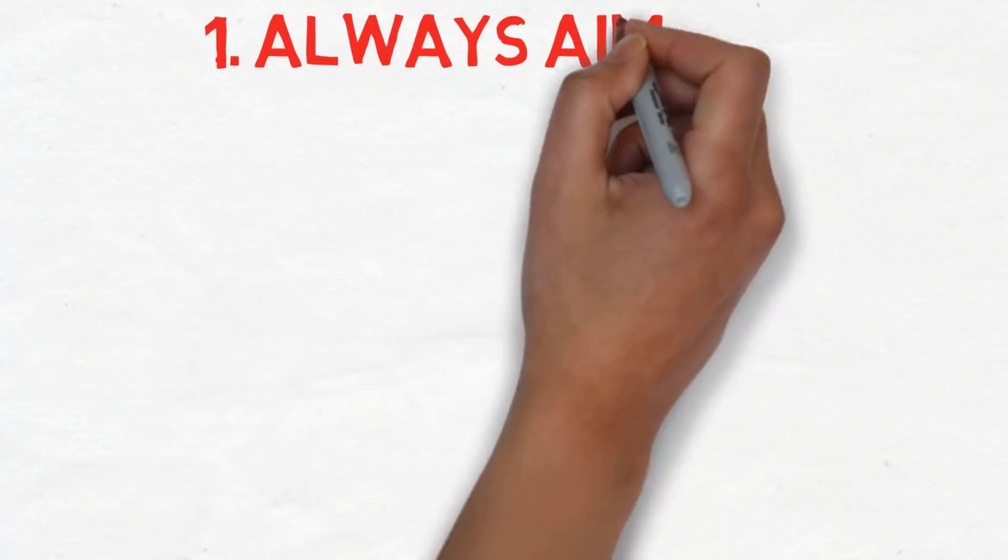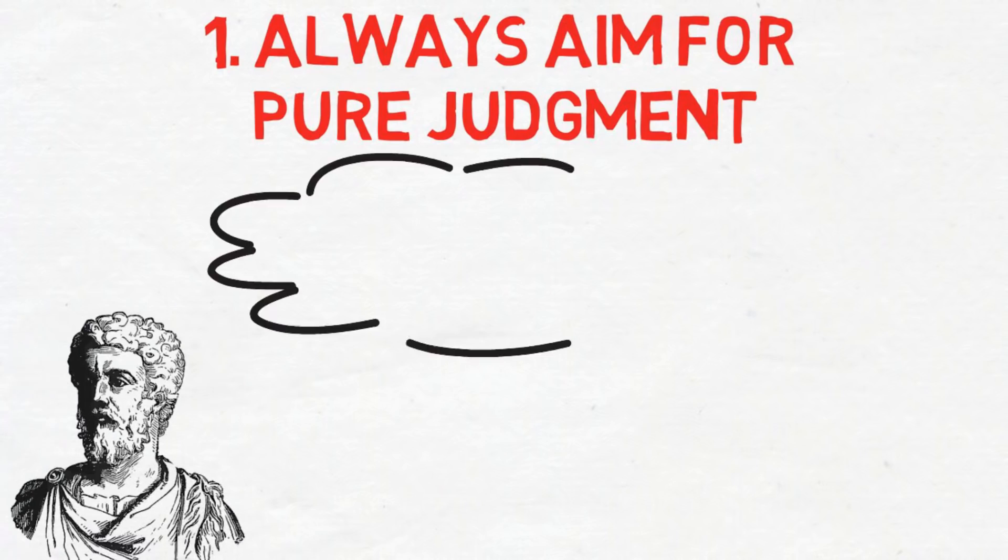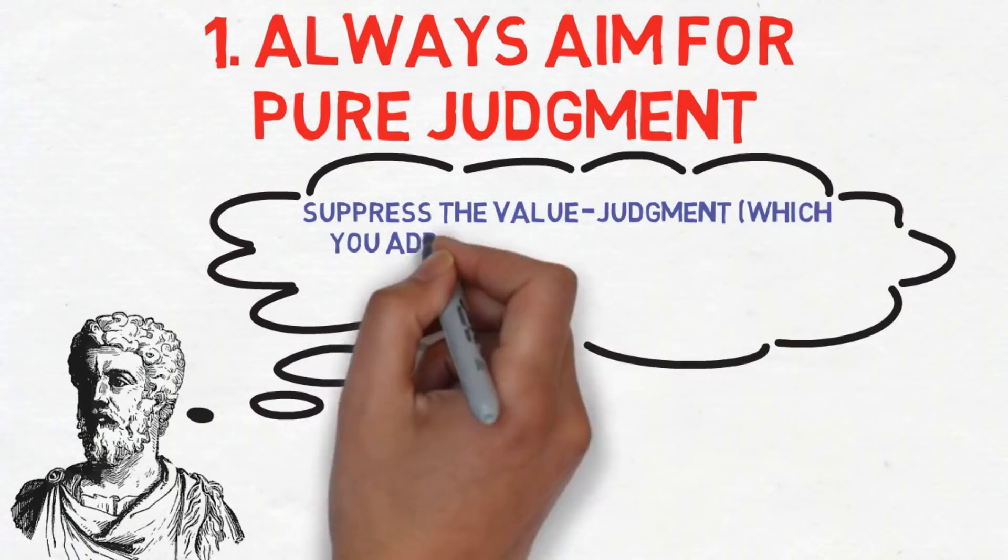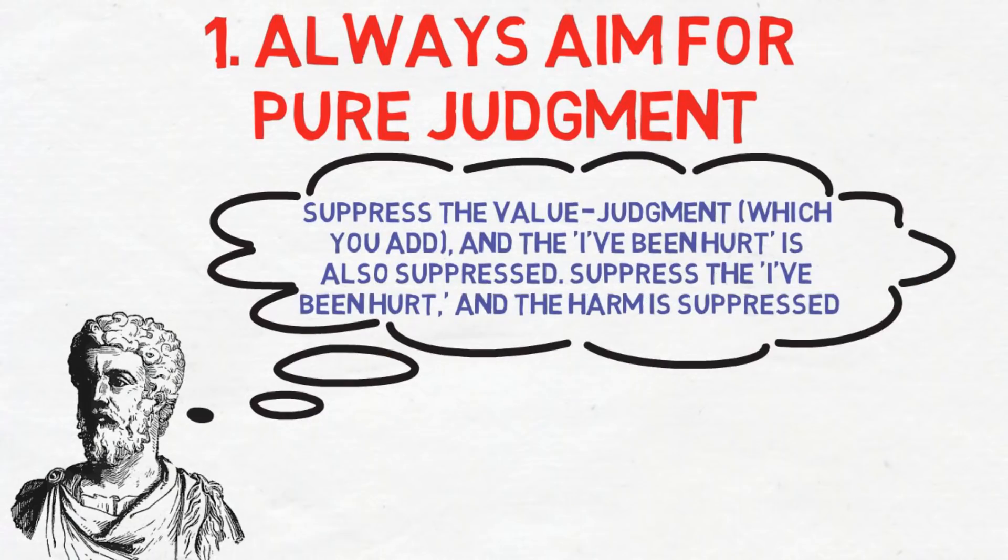Rule 1: Always aim for pure judgment of events. In Book 4 of the Meditations, Marcus Aurelius tells us: Suppress the value judgment which you add, and the 'I've been hurt' is also suppressed. Suppress the 'I've been hurt,' and the harm is suppressed.